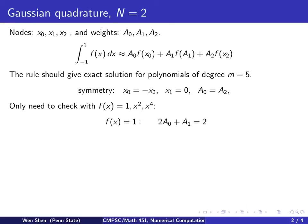So let's start with f(x) equal to 1. So if it's 1, then I will just get A0 plus A1 plus A2. And since A2 equals A0, this is 2A0 plus A1. And the integral of 1 equals 2, same as last time.